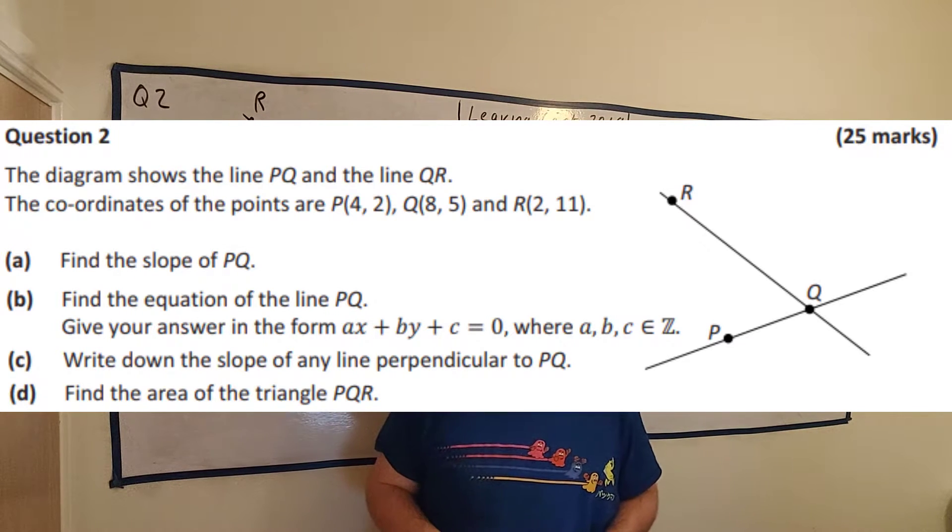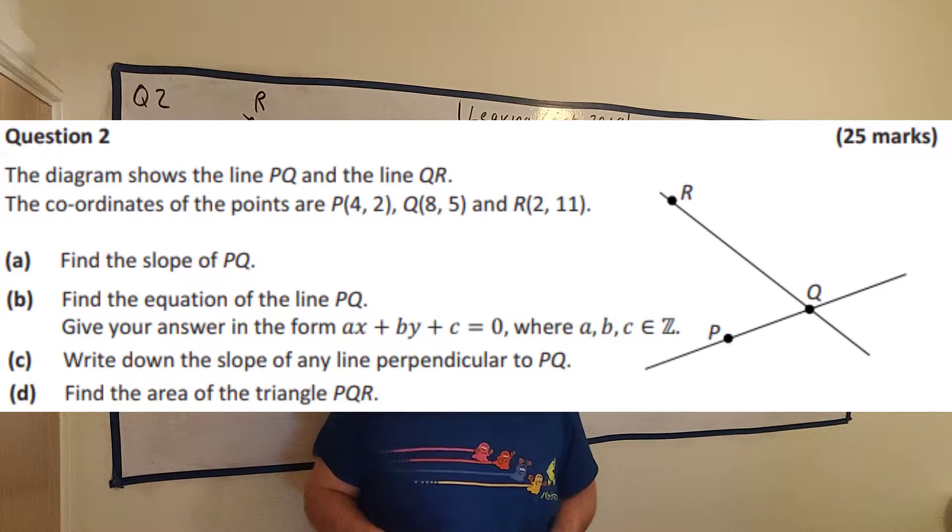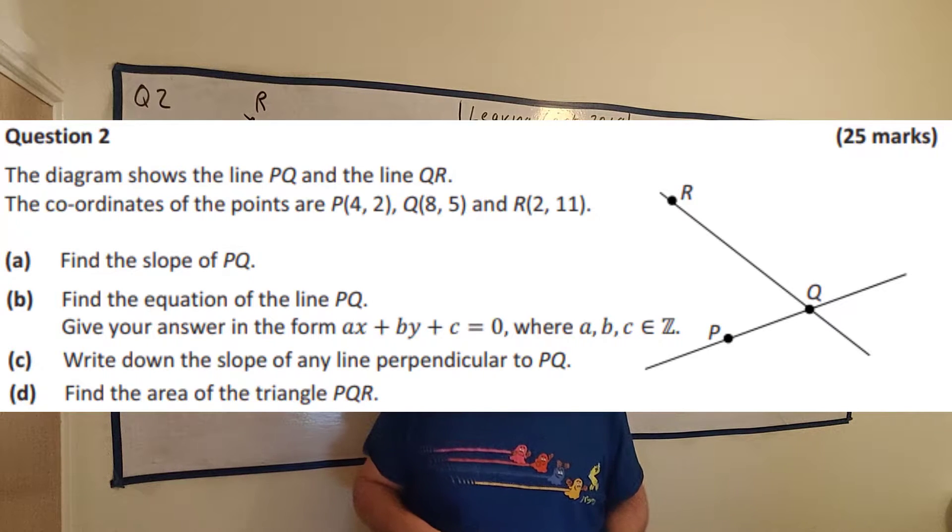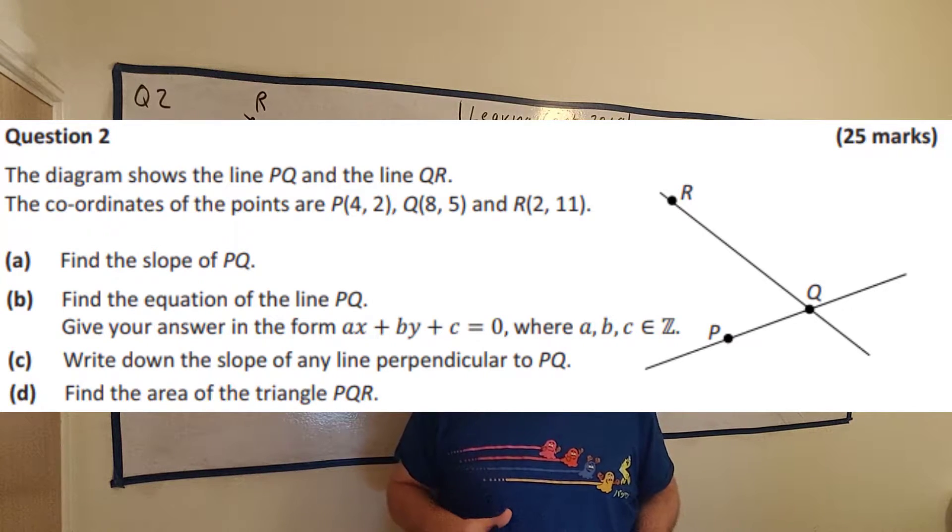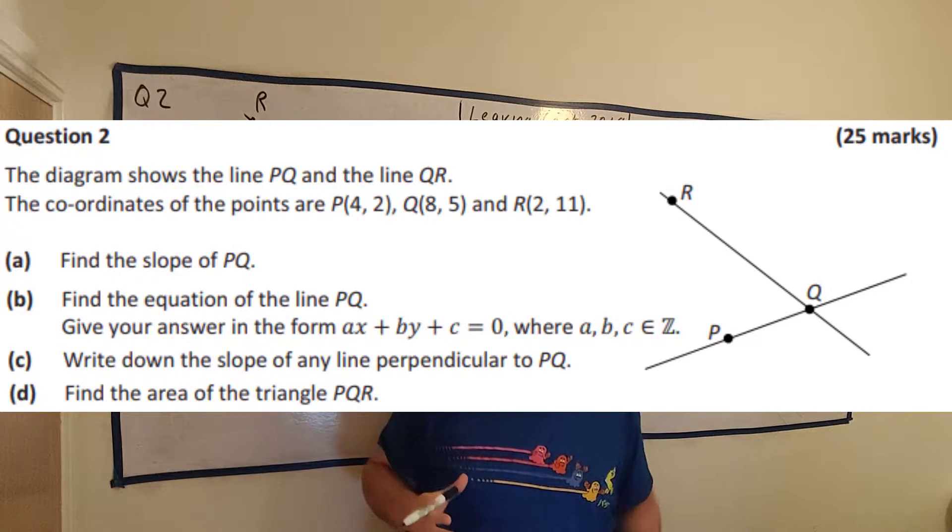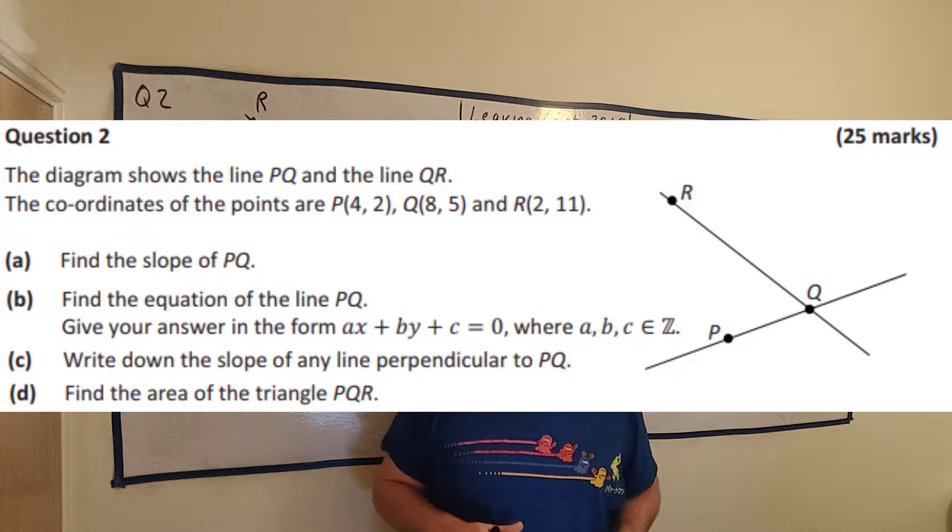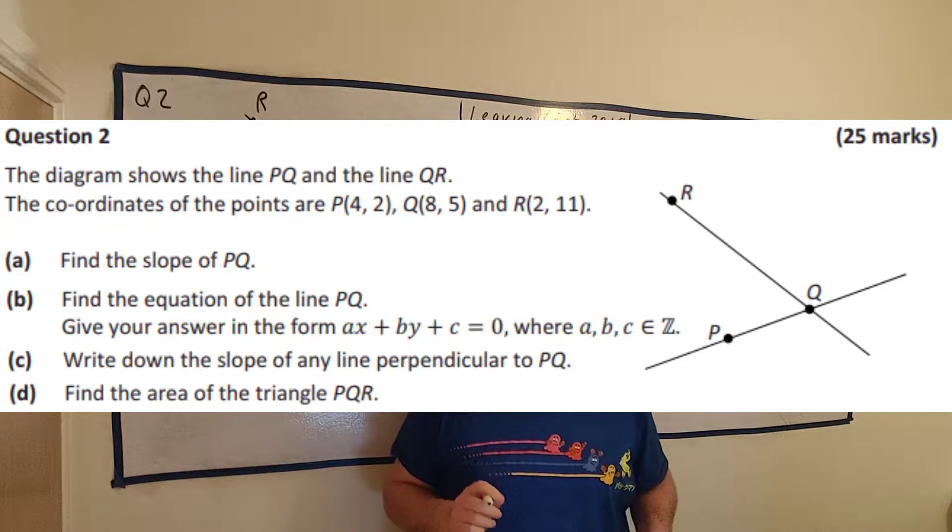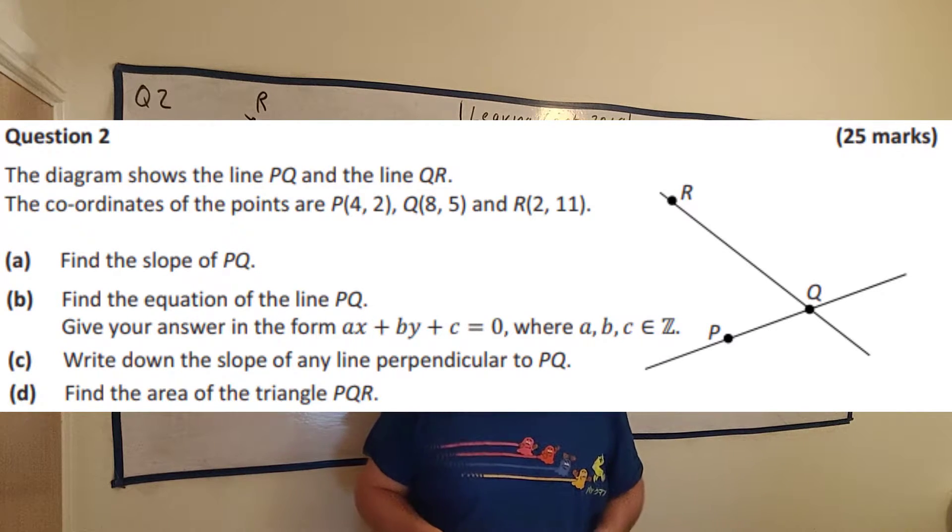This is question 2 of the 2019 Ordinary Level Leaving Certificate Paper 2. In this question we're going to answer multiple questions about coordinate geometry. In the description below you can find a link to an image of this question if you don't have it already.